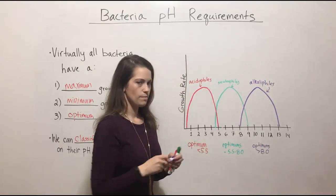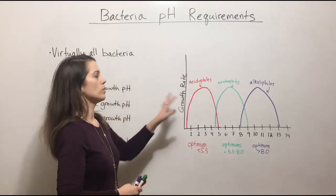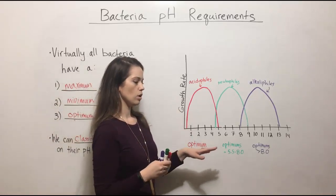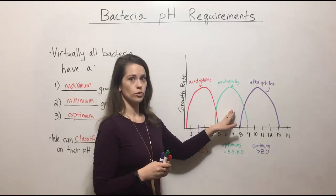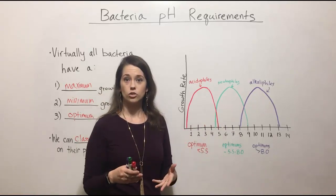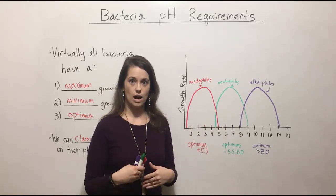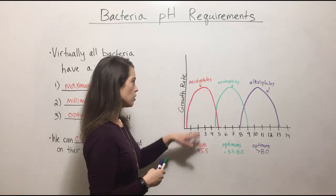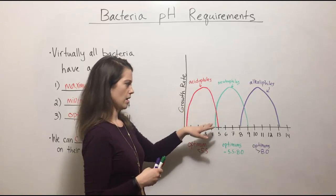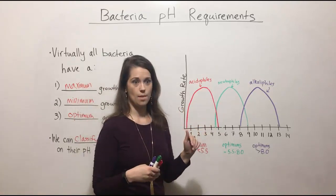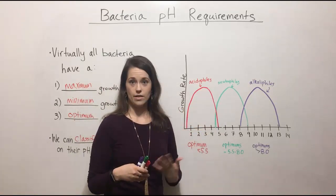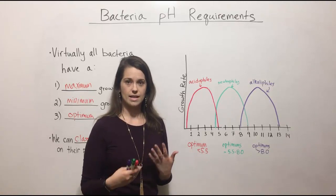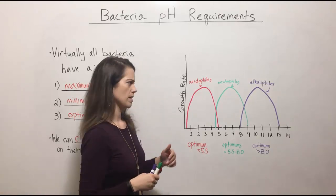And again, different bacteria fall into these different groups. So for example, most E. coli and salmonella are actually neutrophiles, but the pathogenic strains, the ones that can get into our gastrointestinal tracts and cause food poisoning, those tend to be acidophiles because they are better equipped to survive and replicate and grow in the acidic conditions of the human stomach.